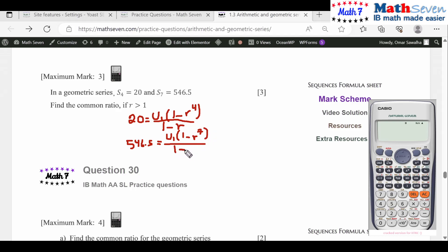So we're going to divide the second equation by the first equation. When you divide this by this, first of all you're going to have 546.5 divided by 20 equals...